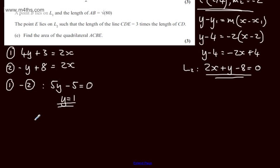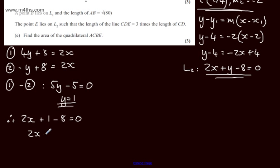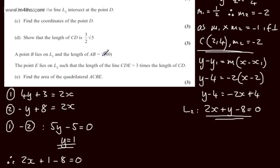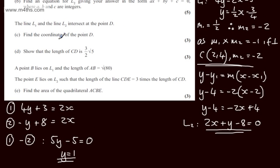I can now substitute y equals 1 into either equation to solve for x. Using equation 2: 2x plus 1 minus 8 equals 0, so 2x minus 7 equals 0, and x equals 7 over 2. So the point D has coordinates (7/2, 1). That's three marks for part C. There are other ways to set up the simultaneous equations — use whichever approach you prefer.